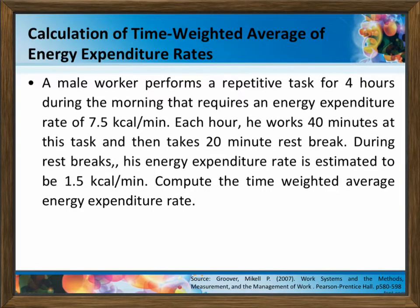For the calculation of time weighted average energy expenditure rates: a male worker performs a repetitive task for 4 hours during the morning that requires an energy expenditure rate of 7.5 kcal per minute. Each hour, he works 40 minutes at this task and then takes a 20-minute rest break. During rest breaks, his energy expenditure rate is estimated to be 1.5 kcal per minute. Compute the time weighted average energy expenditure.